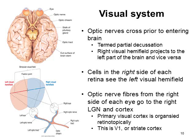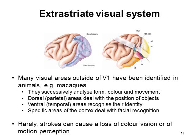V1 is not the only part of the brain that deals with the visual system. In addition to V1, there are a number of extra-striate visual areas. You have a ventral stream and a dorsal stream of information. These different areas successively analyse form, colour, and movement. The dorsal stream, going around the parietal areas, deals with the position of objects, whereas the ventral stream, in the temporal areas, recognises their identity.